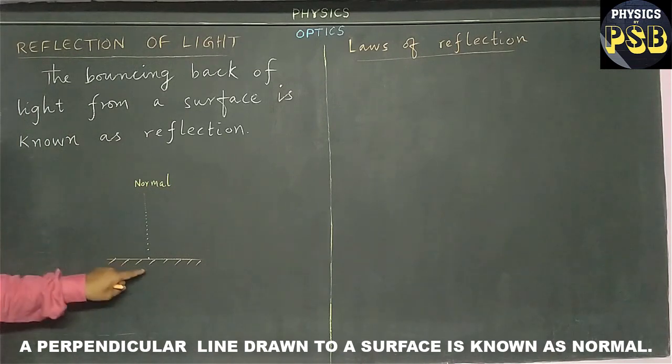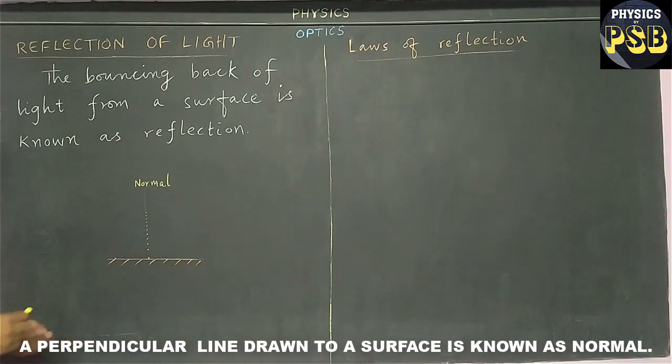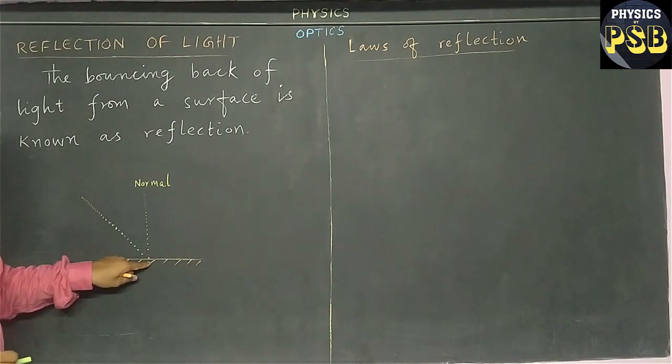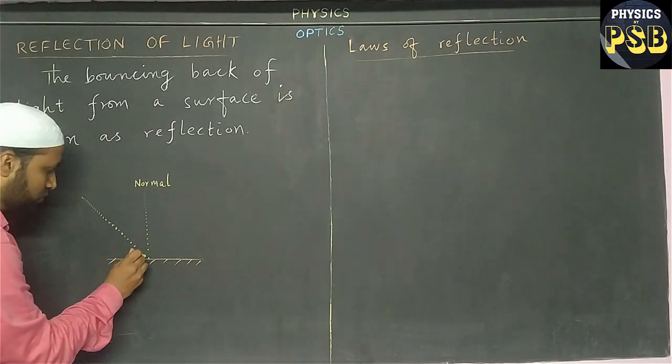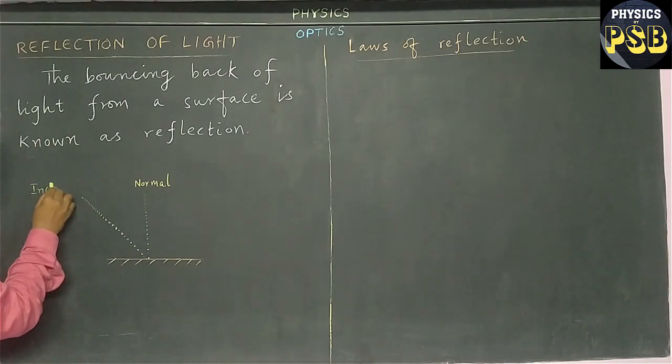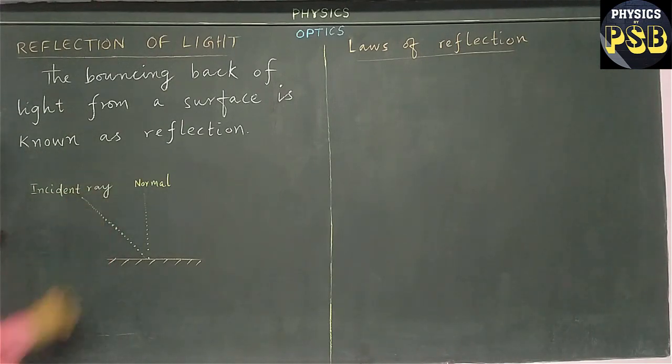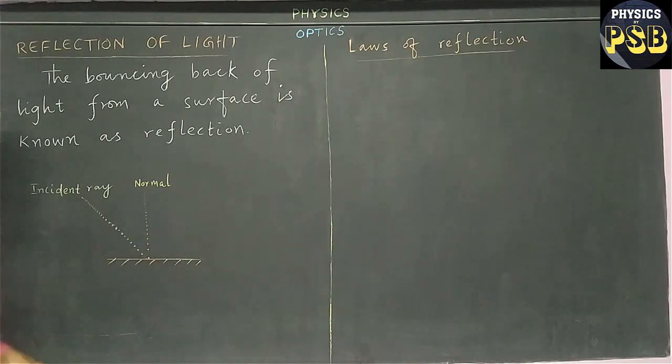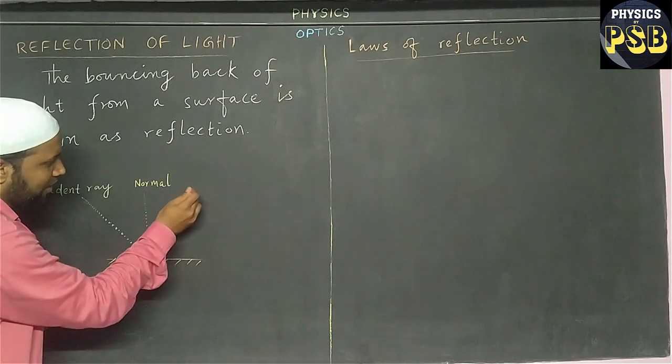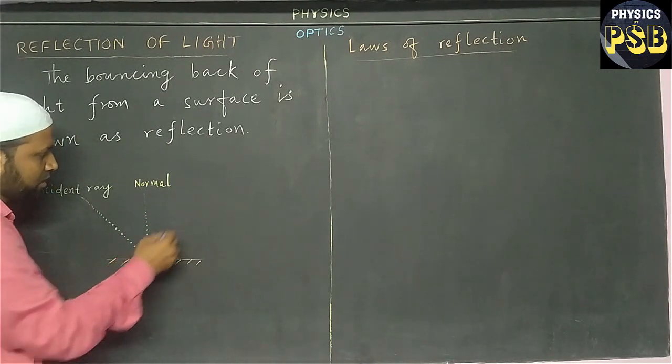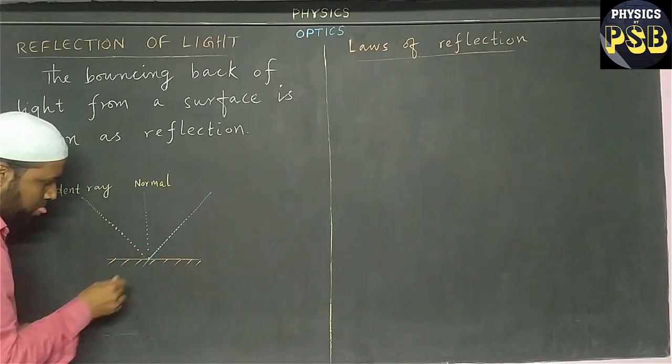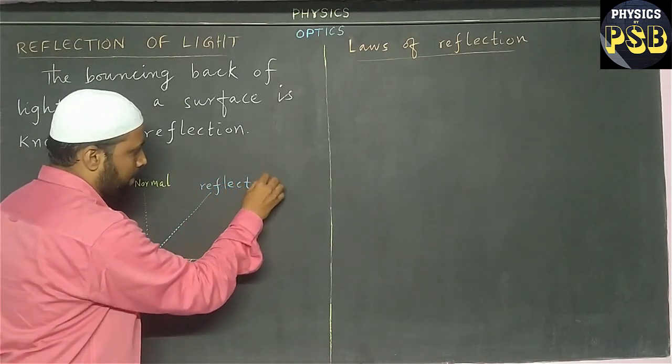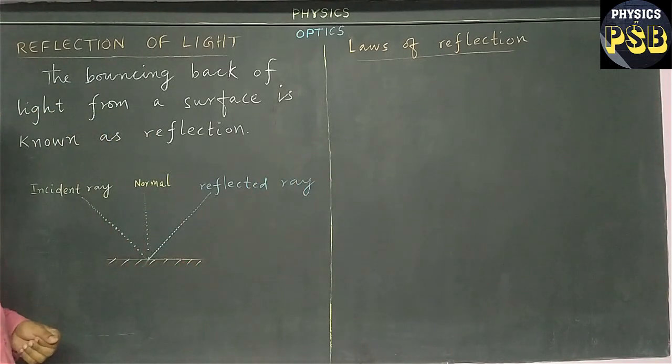Normal is always drawn perpendicular to a surface. Now, a ray of light which hits the reflecting surface is called the incident ray. This is the incident ray. After hitting the reflecting surface, it gets reflected. I show the reflected light with a different color. This is the reflected ray.